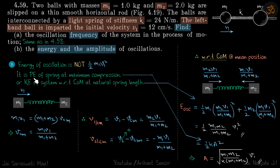And that is potential energy of spring at maximum compression or kinetic energy of system with respect to center of mass at natural spring length. In this problem, initially the spring is relaxed, so whatever kinetic energy of the system we get with respect to center of mass initially is the total energy of oscillation.